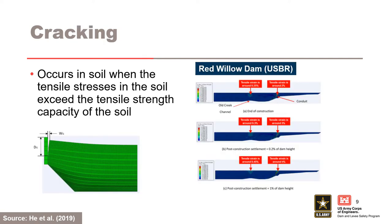When an embankment dam is constructed, differential settlements occur across the valley, resulting from parts of the dam being higher than others settling more as the dam is constructed. This can lead to horizontal strains and potentially cracking or low-stress zones subject to hydraulic fracture. This is most likely to occur where the abutments are steep, where there is a step in the foundation profile, or where there is compressible soil in part of the foundation. After construction, the embankment continues to settle differentially, resulting in additional stresses and strains. These are inevitable and occur even for well-constructed dams. The figure on the left illustrates how differential settlements may also result in gaps or cracks opening adjacent to spillway structures.